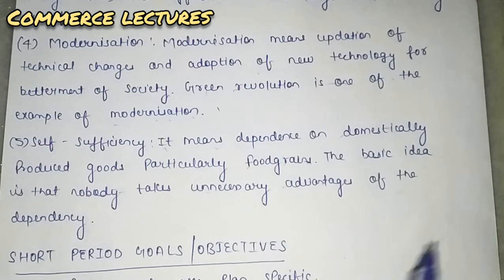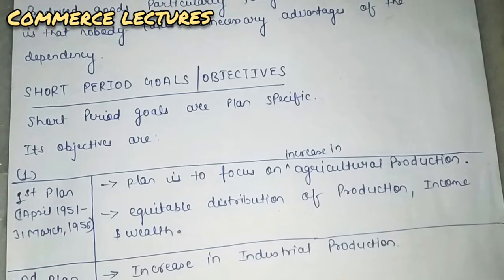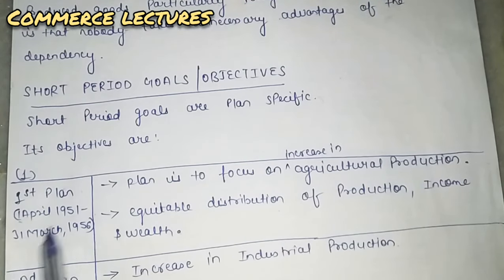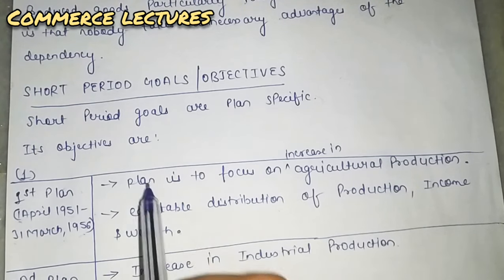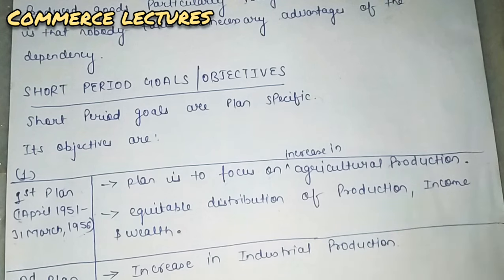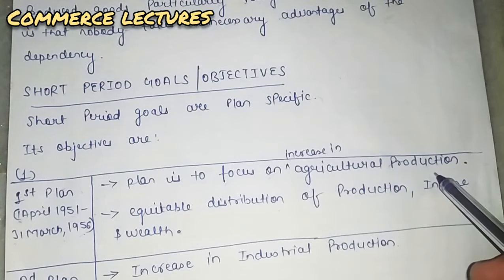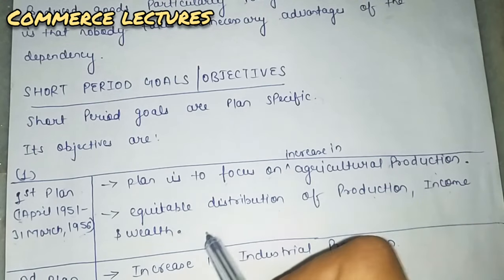Now let's move on to short period goals and objectives, which are the year-wise five year plans. Our first plan ran from 1st April 1951 to 31st March 1956. Its focus was on increasing agriculture production and equitable distribution of production, income, and wealth.